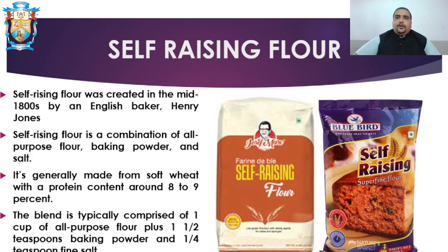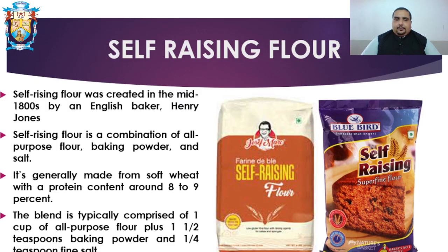Next is self-raising flour. Self-raising flour was created in the mid-1800s by an English baker called Henry Jones. It is a combination of all-purpose flour, baking powder, and salt — a ready baking flour generally made from soft wheat with a protein content of around eight to nine percent. The blend is typically one cup of all-purpose flour, one and a half teaspoons of baking powder, and one-fourth teaspoon of fine salt. You just need to add water to prepare the dough.